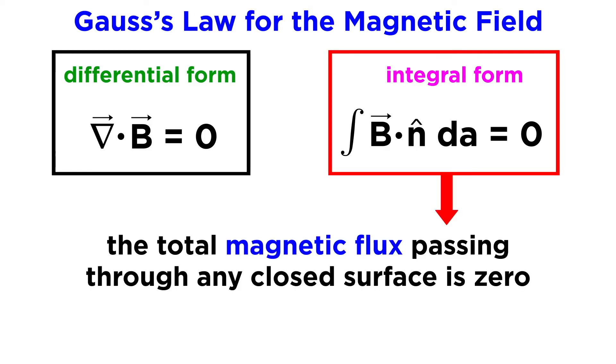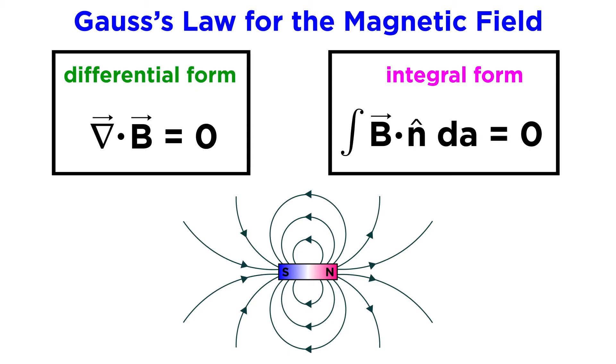The integral form of Gauss's law for the magnetic field states that the total magnetic flux passing through any closed surface is zero. Both forms arise directly from the idea that there are no isolated magnetic poles in nature, unlike electric charge.